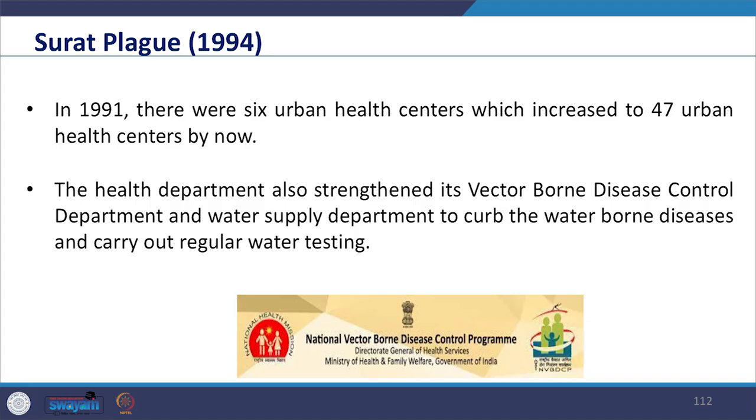After the plague, health indicators improved due to the strengthening of health infrastructure, revival of work ethics among health workers, meticulously planned disease monitoring systems and an extensive sanitation drive. In 1991 there were 6 urban health centres, which increased to nearly 47 urban health centres. The health department also strengthened its vector-borne disease control department and water supply department to curb waterborne diseases and carry out regular water testing. The monitoring system was developed and a drive mode was adopted, which helped in controlling and improving the situation of the city.